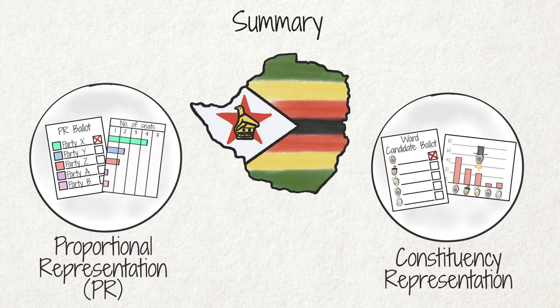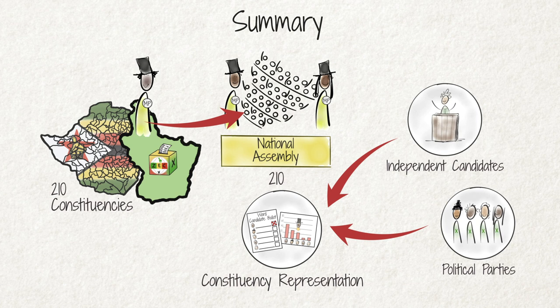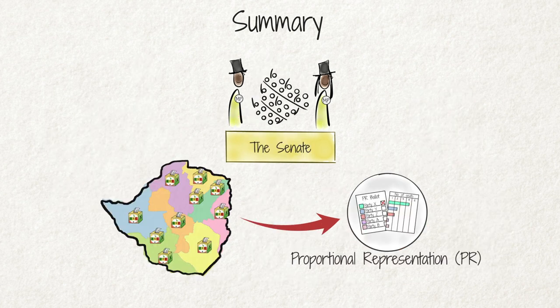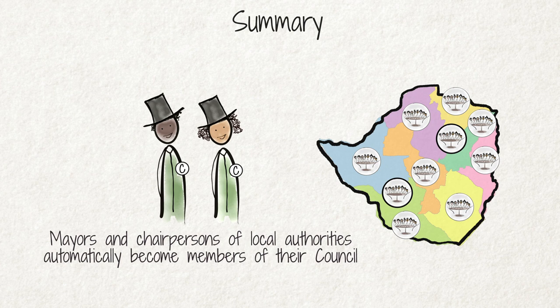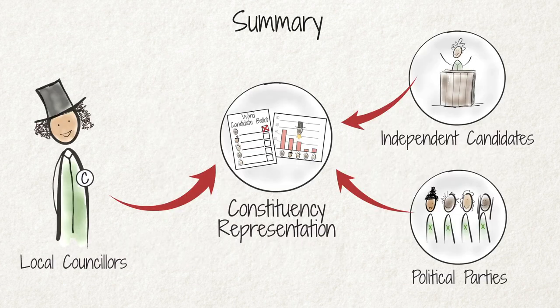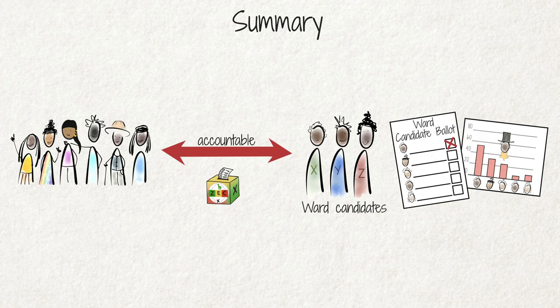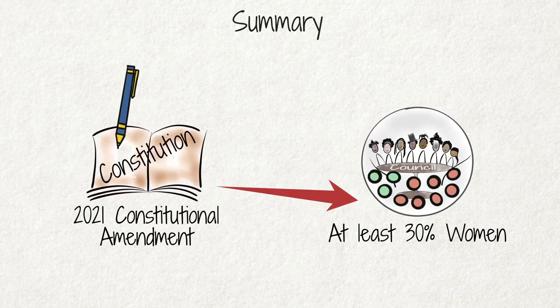In summary, the majority of members of the National Assembly in Zimbabwe are elected according to the constituency representation system, while the majority of senators are elected using the PR system. For provincial and metropolitan councils, only 10 representatives are directly elected through the PR system, with the remainder comprising mayors and chairpersons of local authorities. For local government elections, the constituency electoral system ensures that the majority of councillors are directly accountable to people in specific geographic communities. The 2021 constitutional amendment makes provision for special seats designated for the election of women under the PR system, a significant measure towards achieving gender parity in local councils.